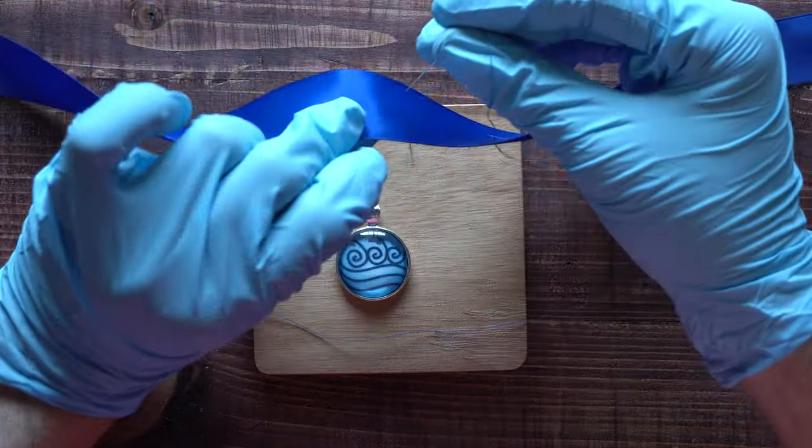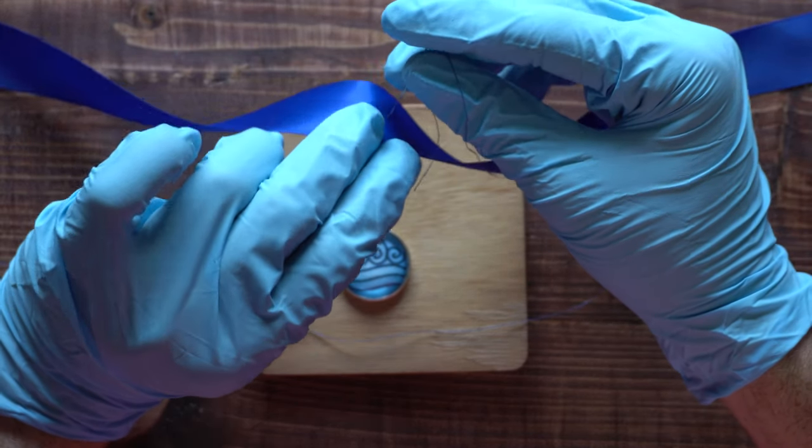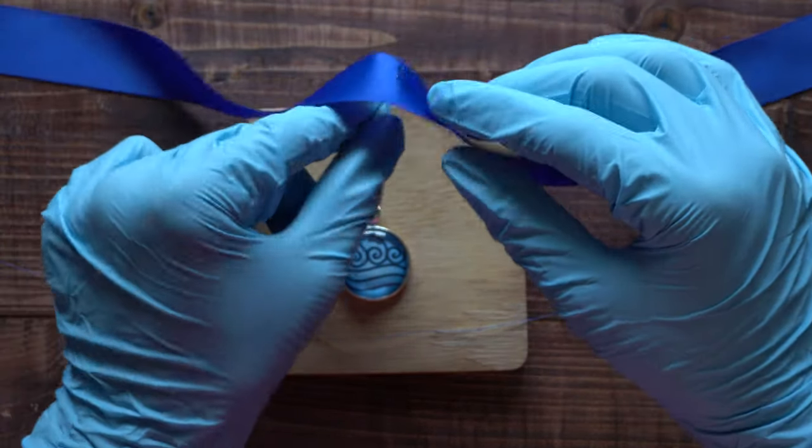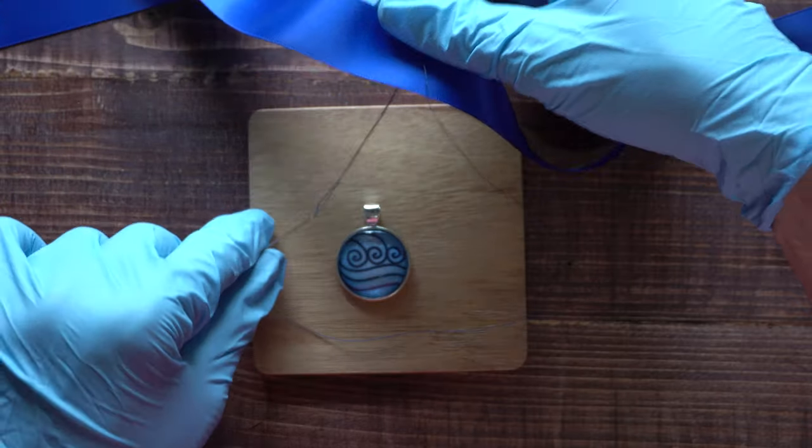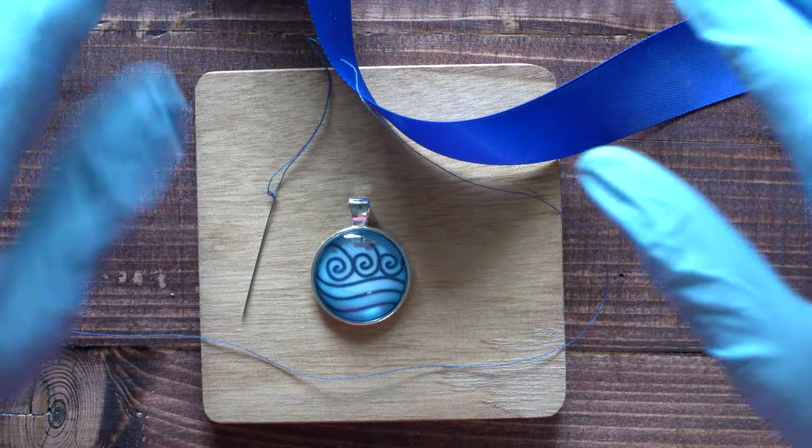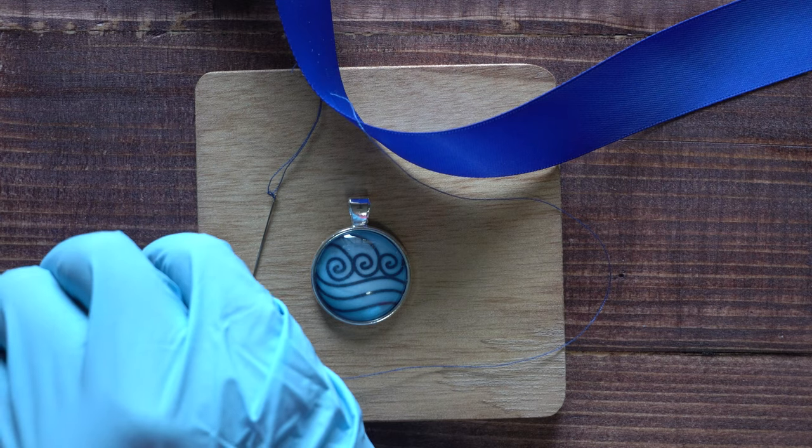Next, we're going to be sewing the pendant onto the ribbon. To do this, you're going to first need to find the middle of the ribbon and where you want the pendant to be placed. Start through the backside of the ribbon and take the thread through the loop at the top of the pendant.